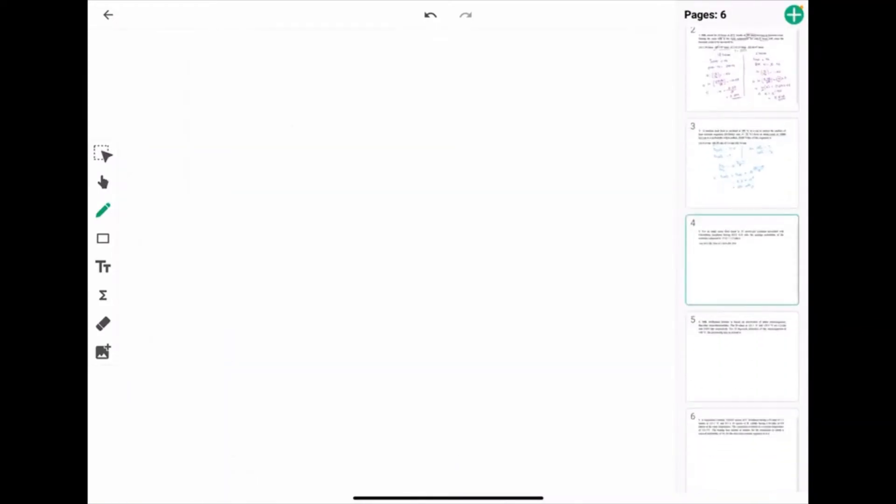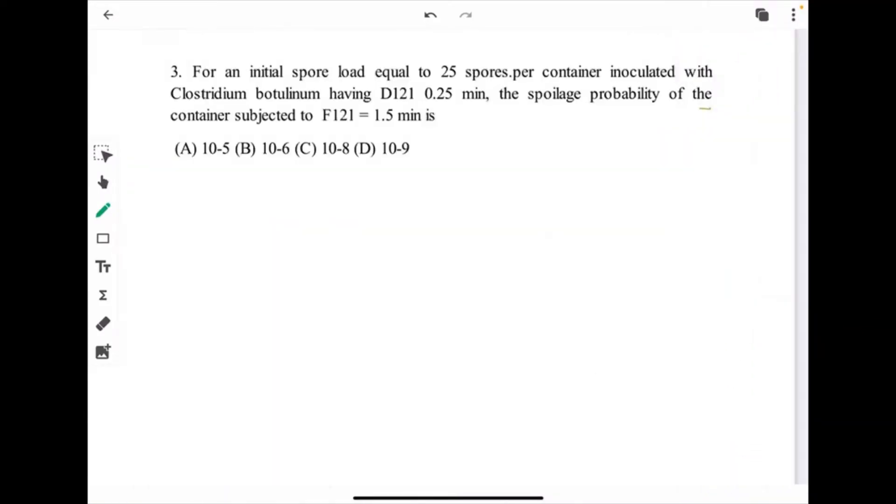Next question. For an initial spore load equal to 25 spores per container inoculated with Clostridium botulinum having D 121 degree Celsius 0.25 minute and the spoilage probability of the container subjected to F 121 is 1.5 minute. We have to find this spoilage probability. What all the things we have given: D 121 degree Celsius is 0.25 minute, F 121 degree Celsius 1.5 minute, initial load we know 25 spores per container.